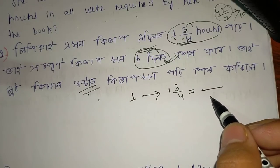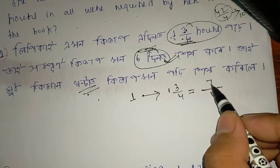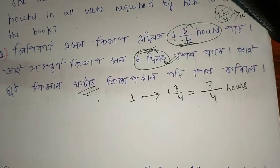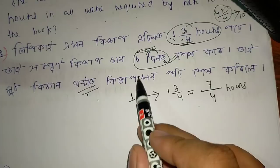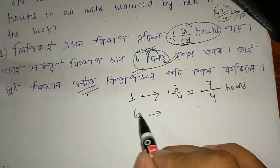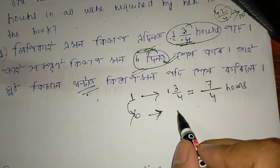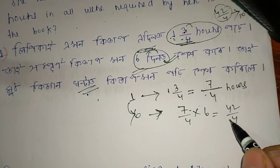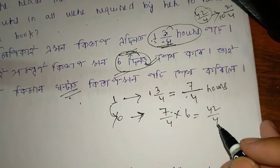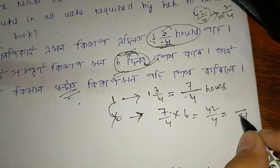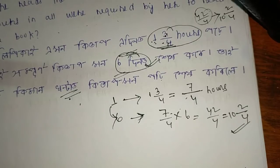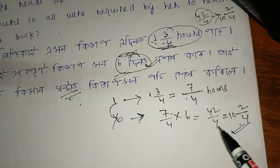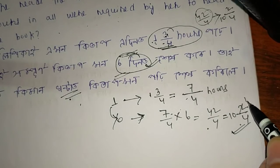The appropriate time to change: 1 and 3/4 becomes 7/4. We multiply 7/4 by 6 days. So 7/4 into 6 equals 42/4, which simplifies. Converting to a mixed fraction gives us the answer. The lowest fraction is 10 and a half hours total. If you have any questions, please write in the comments.